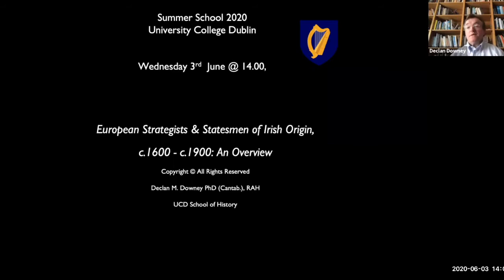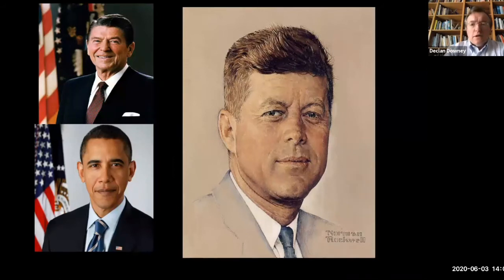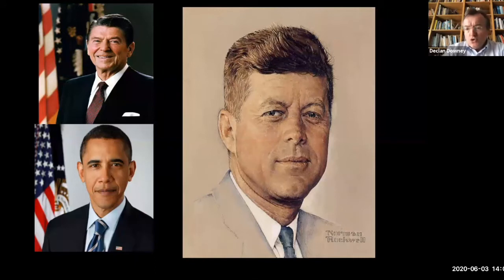Thank you very much Roshi, and welcome everyone to this UCD Summer School history lecture. Today I'm going to speak to you about European strategists and statesmen of Irish origin from 1600 to 1900 roughly. It's just an overview, an introduction to this aspect of Irish history and its connection with Europe. Very often when we think of our connections with the outside world, everyone thinks of America and John F. Kennedy, the first great US President of Irish origin.